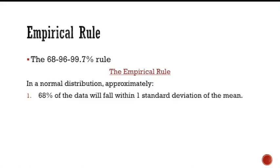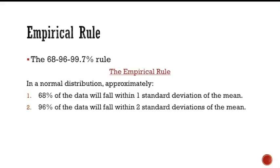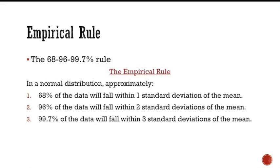95 percent of the data will fall within two standard deviations of the mean, and 99.7 percent of the data will fall within three standard deviations of the mean. It is imperative to understand the empirical rule to calculate percentages on a normal curve.